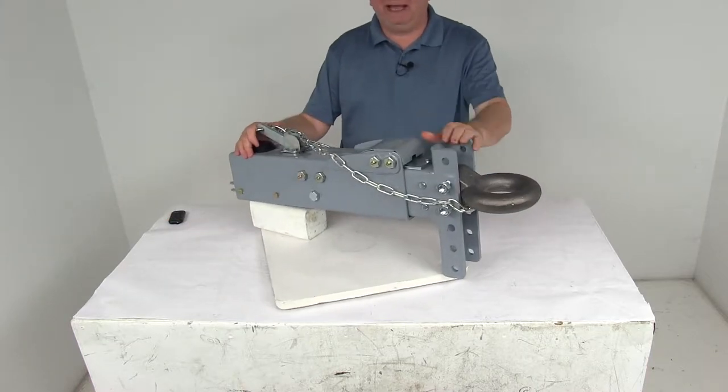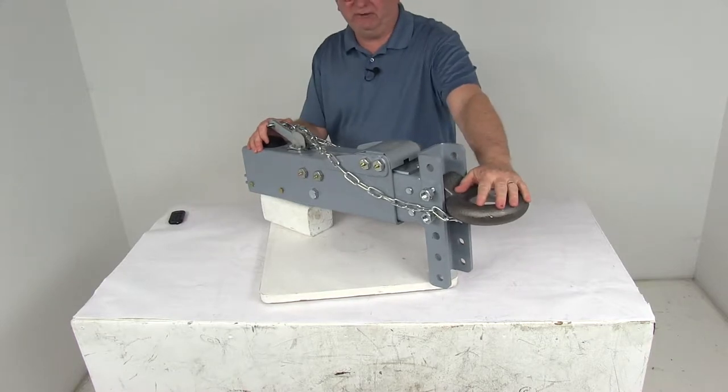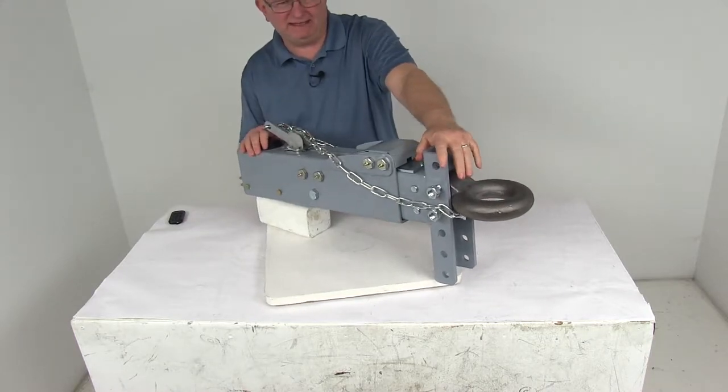Today we're going to take a look at the Titan Drum Brake Actuator with the 5 position adjustable channel and the 3 inch lunette ring. It has a 20,000 pound weight capacity.